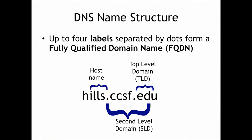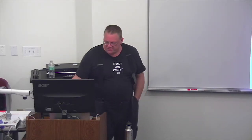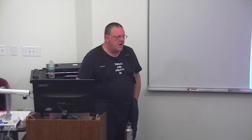At the top of the hierarchy is root, which only contains a list of where the top-level domain servers are. To reach yahoo.com, you ask root where .com is, ask .com where yahoo.com's name server is, then ask yahoo.com where www.yahoo.com is. It should take three or four queries, but most of the time it takes much less because caching resolvers remember what's been resolved recently.